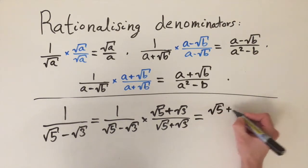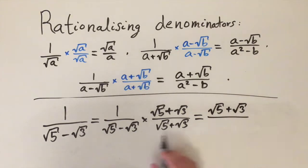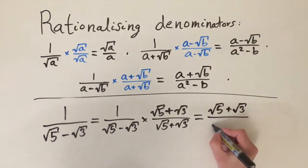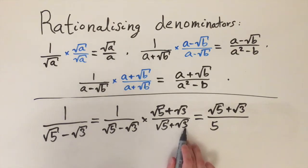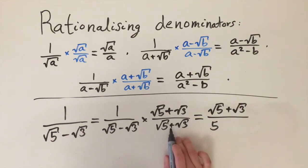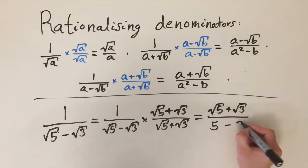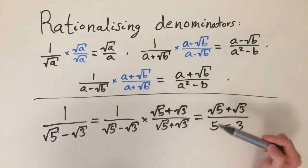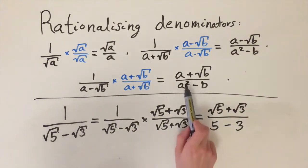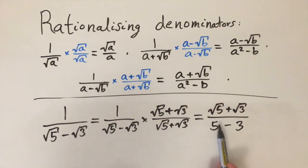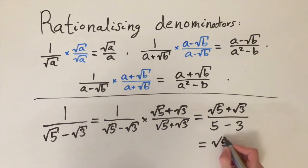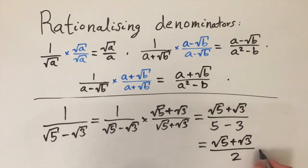On the numerator we get the square root of 5 plus the square root of 3. On the denominator: the square root of 5 times the square root of 5 is 5; the cross terms — minus the square root of 3 times the square root of 5 and plus the square root of 3 times the square root of 5 — cancel out; and minus the square root of 3 times the square root of 3 gives minus 3. This is essentially the same formula, just with square root of a in place of a, so we get 5 minus 3 equals 2. We're left with the square root of 5 plus the square root of 3 divided by 2, and the denominator is now a rational number, which is exactly what we want.